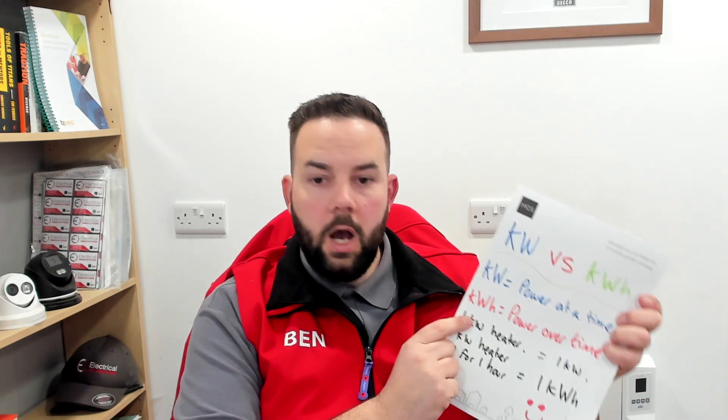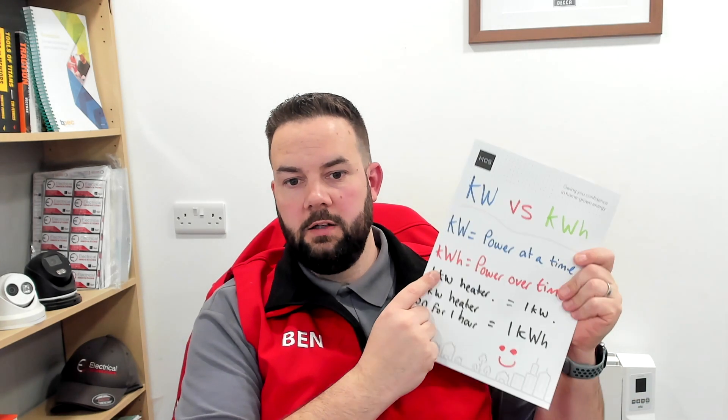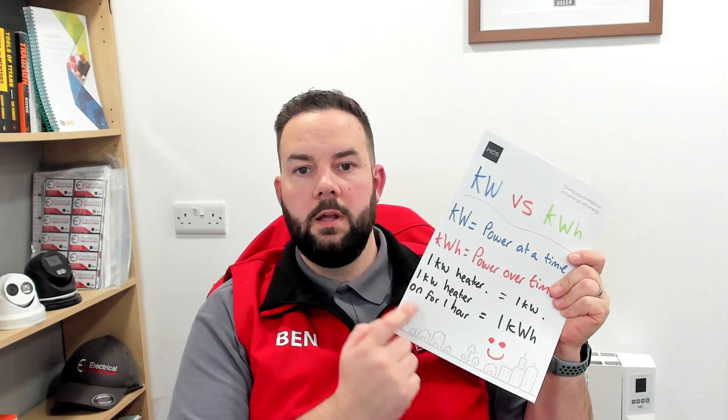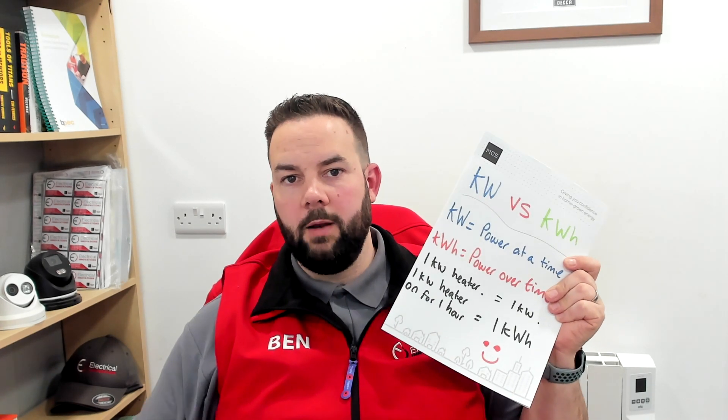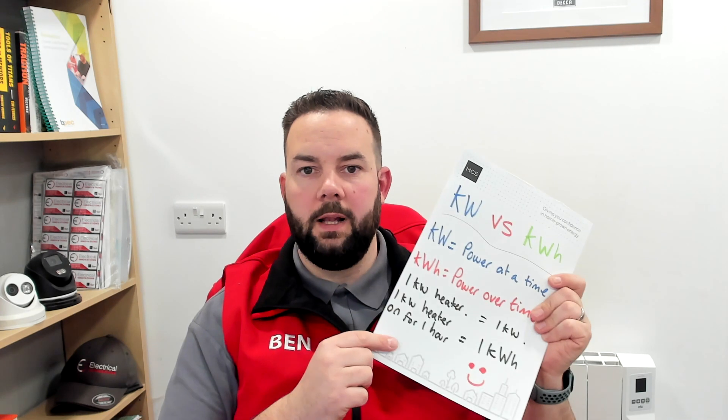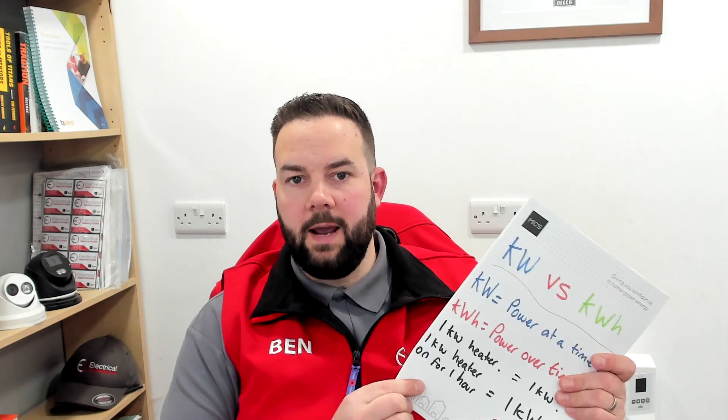A one kilowatt heater running at one kilowatt for one hour is going to produce one kilowatt hour — that's what you're going to get billed on. So if your tariff is 40 pence per kilowatt hour and you run a one kilowatt heater for an hour, you're going to get 40 pence of billing. Similarly with solar, if you're producing three kilowatts on the roof and you're doing that for three hours in the day, you'll have produced nine kilowatt hours.